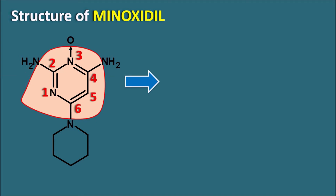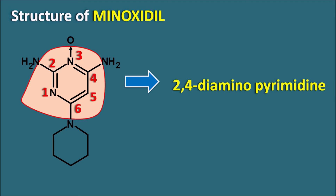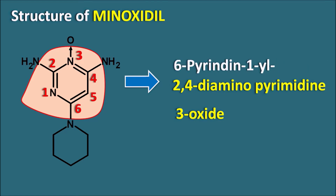Minoxidil contains the 2,4-diamino pyrimidine moiety, which is attached with an N-oxide at the third position — making it 2,4-diamino pyrimidine 3-oxide. At the sixth position, we can observe another side chain: a piperidino group. This is the structure of Minoxidil.